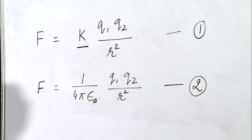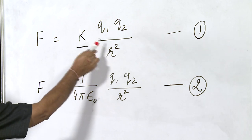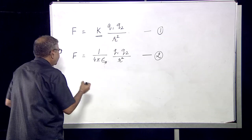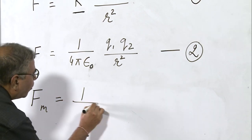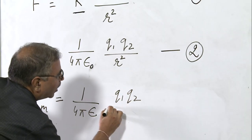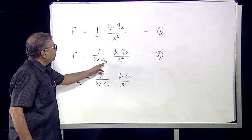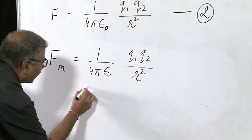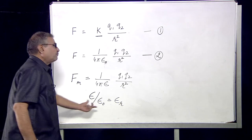This constant K has been found to be equal to 1 upon 4 pi epsilon naught, where epsilon naught is the permittivity of free space, as the spacing between the two charges Q1 and Q2 is free space or vacuum. If these two charges are kept in a medium, then the force can be written as F medium equals 1 upon 4 pi epsilon, Q1 Q2 upon R square. So when we write the force in a medium, epsilon naught is replaced by epsilon, the permittivity of that medium.